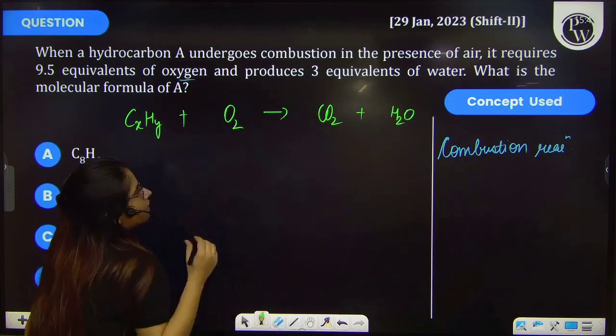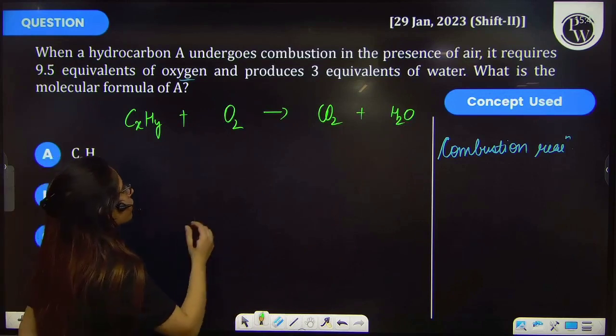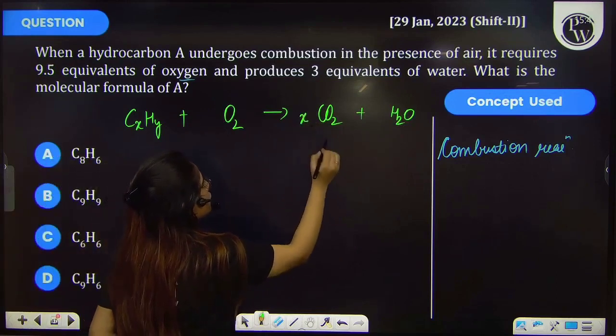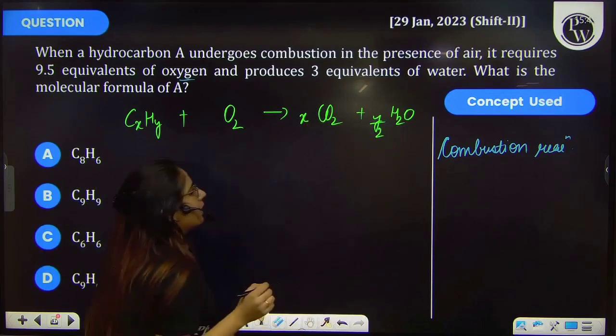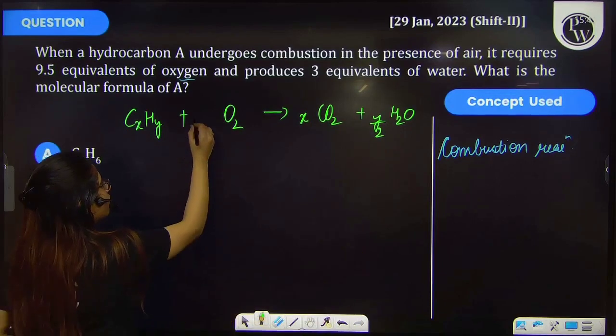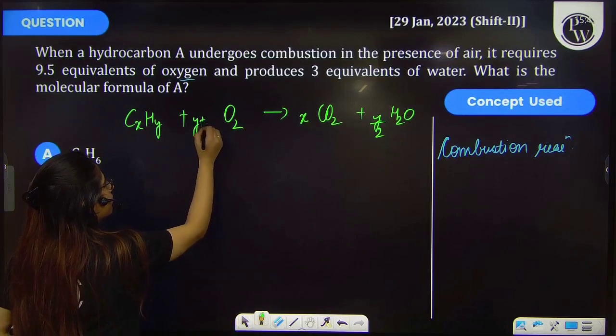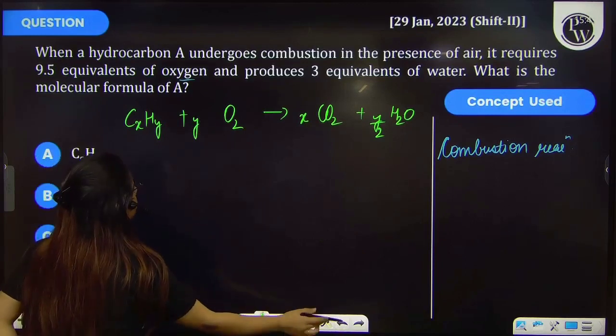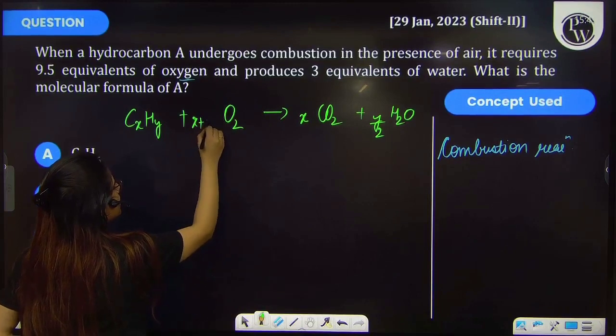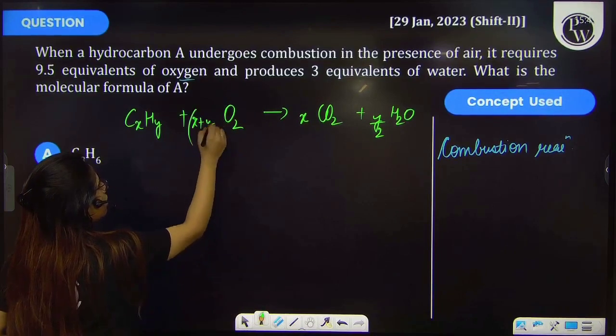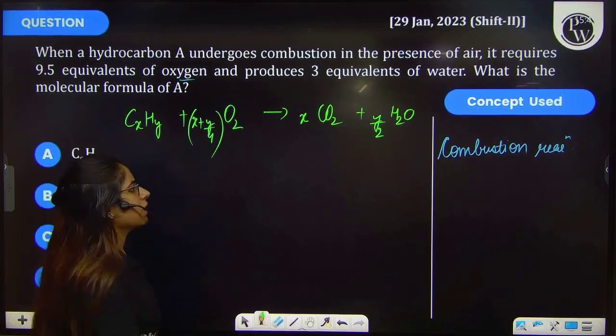Let's balance the equation in terms of x and y. So it will be x moles of CO2, y by 2 moles of water, and for oxygen it will be x plus y by 4 moles of oxygen.